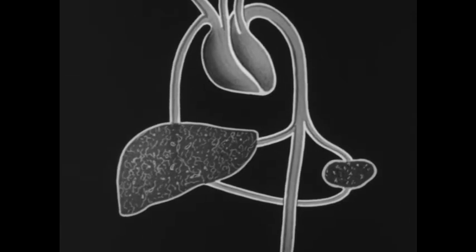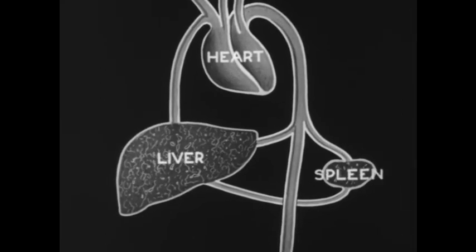Closely associated with this secondary line of defense is the third line: the blood circulatory system, including the heart, the liver, and spleen.